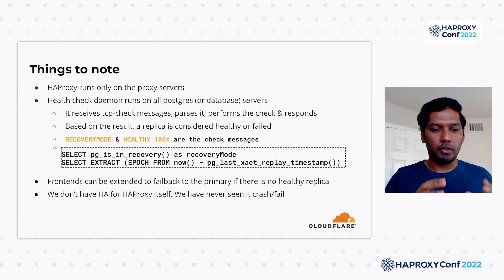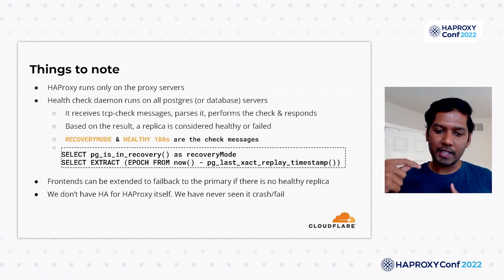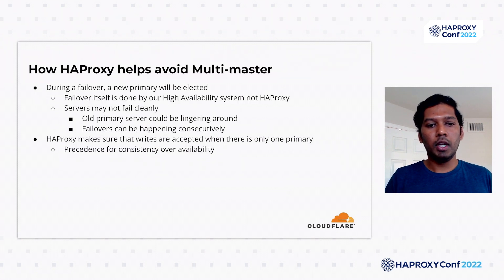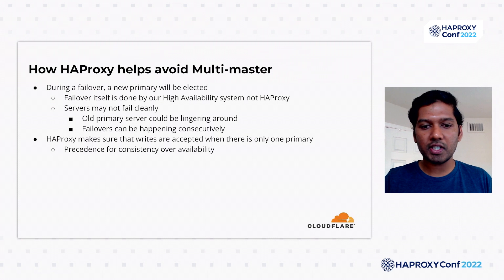The other SQL takes the current timestamp using the now() function and subtracts it from the last replay timestamp of the last WAL log replayed, giving us the replication lag delta. The frontend can also be extended to fail back to the primary if there is no healthy replica — if all five replicas go down, we can send all read traffic back to the primary, since the primary can serve both reads and writes. Lastly, we don't have HA for HAProxy itself, but to be honest we haven't seen any case of HAProxy itself going down, which speaks to its stability and quality.